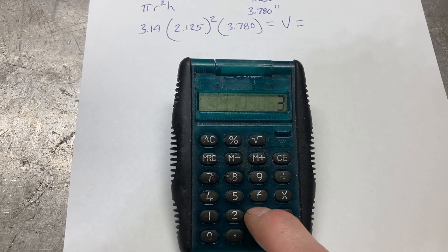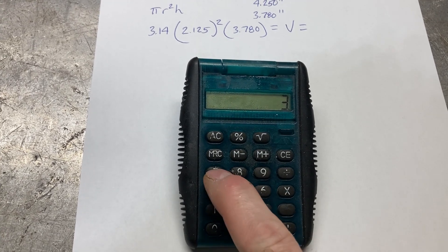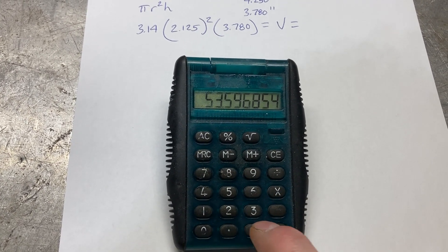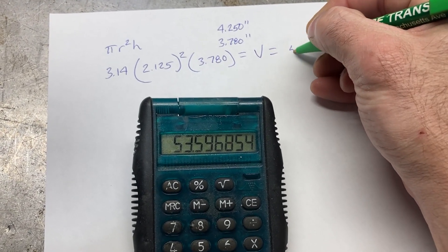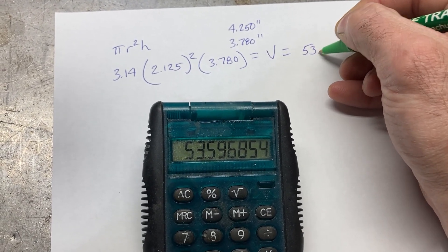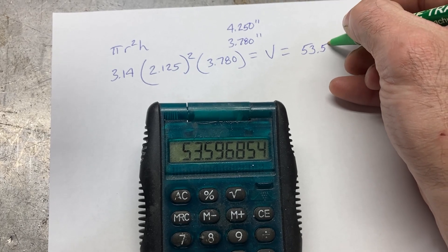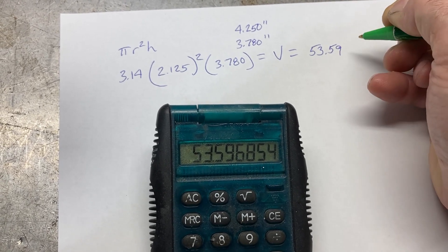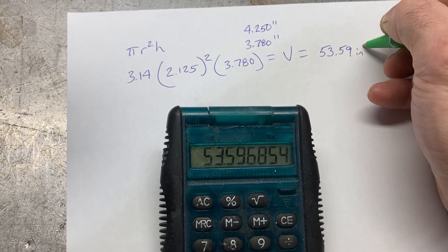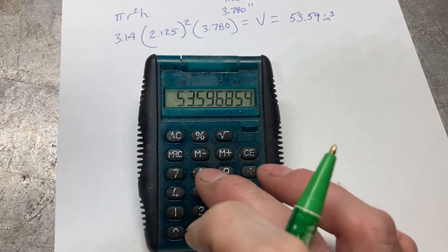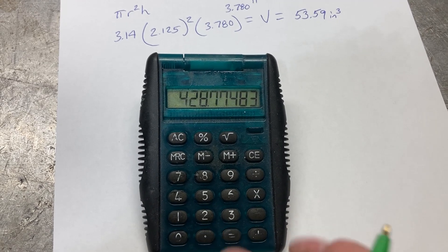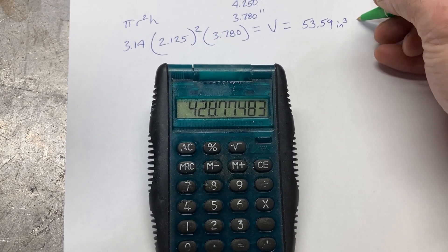That would be the volume of one cylinder: 53.59 cubic inches. Obviously we're dealing with a V8, so we're going to multiply by 8. That gives us our displacement for the entire engine of roughly 429 cubic inches.